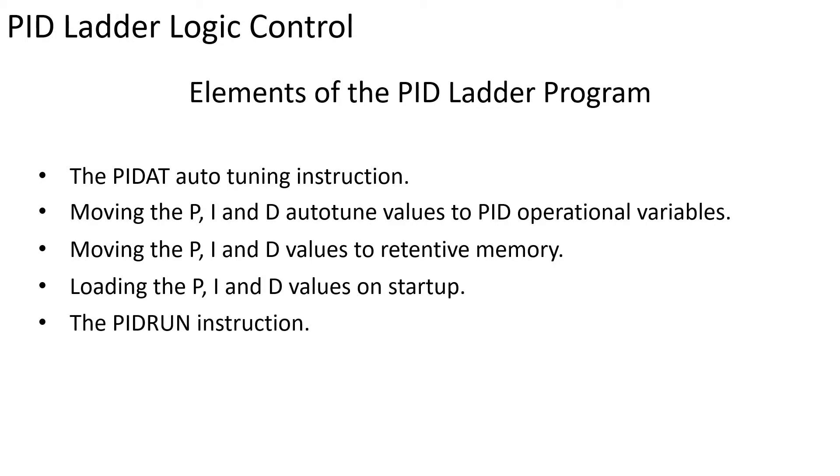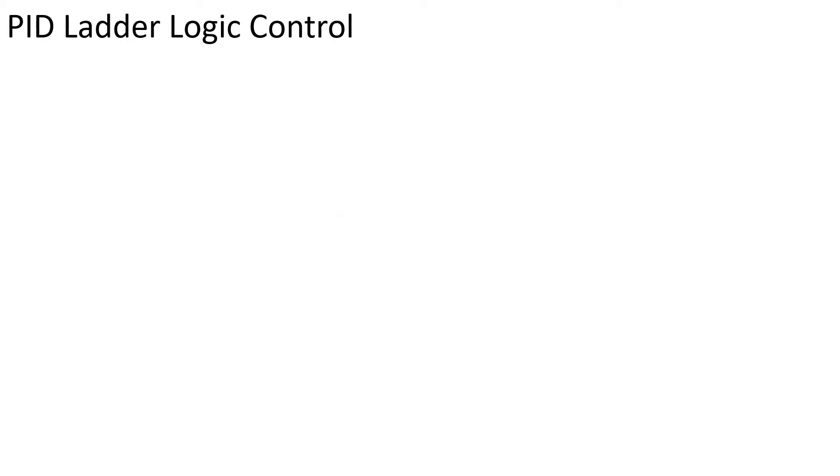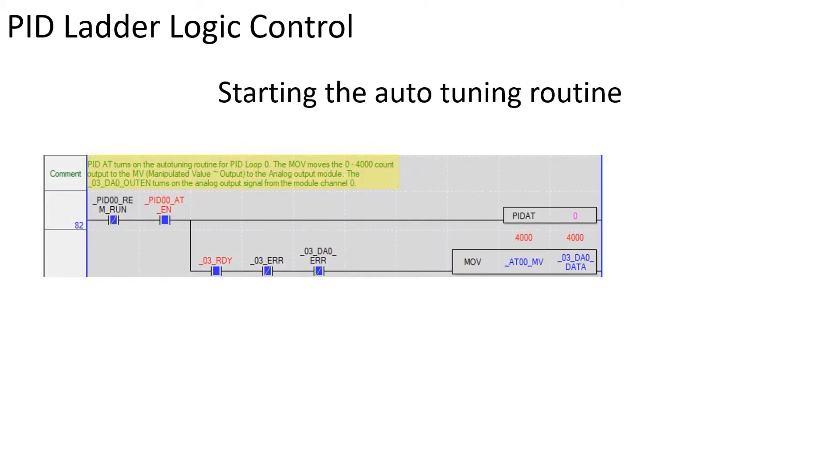The PID run loop control instruction. In rung 82, if loop 0 PID remote run bit is off and the PID 0 AT enable bit is turned on, the PID auto-tuning routine will begin.